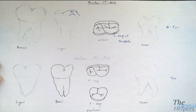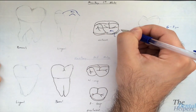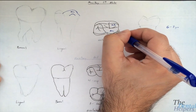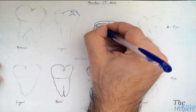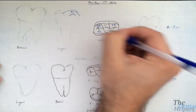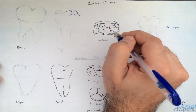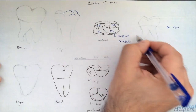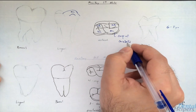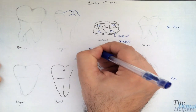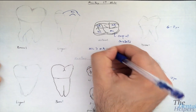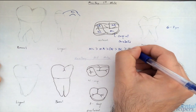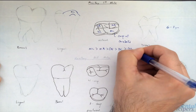If we look at the size of the cusps, the mesial lingual is the largest. Then we go to the mesial buccal, then the distal buccal, and then the distal lingual. The fifth and smallest cusp is the cusp of Carabelli. So the size order is: ML > MB > DB > DL > cusp of Carabelli.